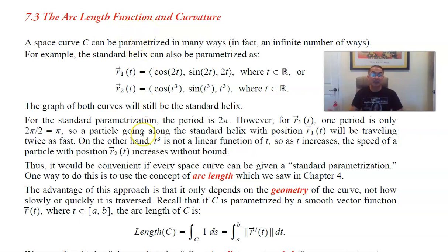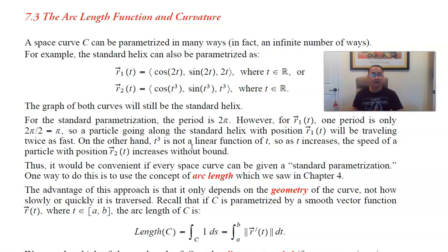Why would we want to do that? The main goal of creating the arc length function is to reparameterize the curve so that we get a standard parameterization. When we see a curve, we've already seen that we can parameterize it in lots of ways. For a line segment you can go from a to b or from b to a — either way you get exactly the same line segment. For a helix, the standard formula has cosine t, sine t, and t, but if you multiply all the parameters by two, you still parameterize the helix — just twice as fast.